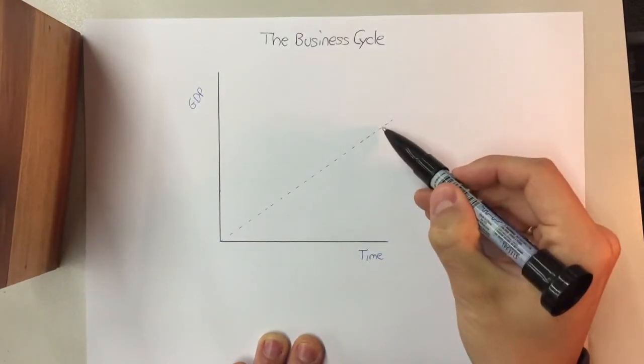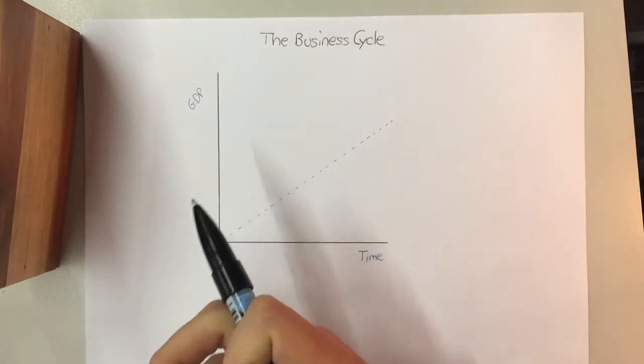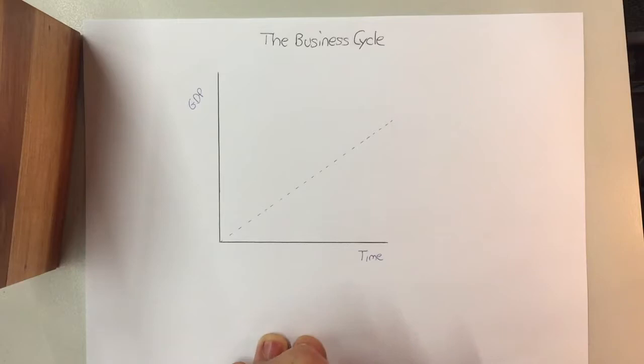And years down the line, we'll be able to make far more than we could back, say, 20, 30 years ago. Remember GDP is your gross domestic product, so it's the entire amount of stuff that we make in a year, goods and services.